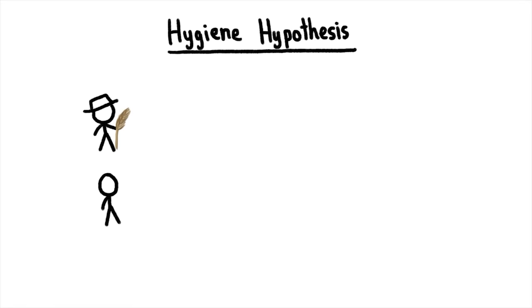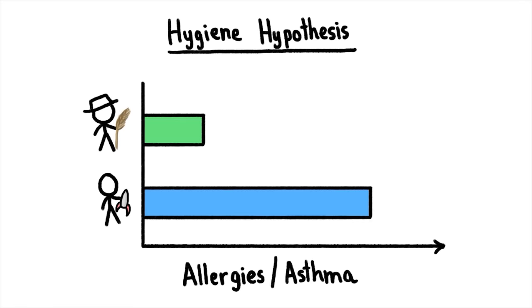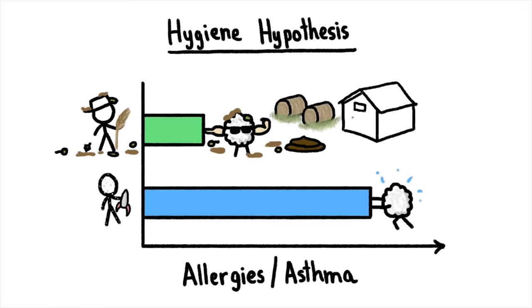You know how children from Amish farm families have been found to suffer less from allergies and asthma than is typical in the modern westernized world? Well, scientists think it's because their immune systems develop more fully thanks to exposure to a wide variety of dirt, bacteria, and germs in fermenting feed, cow manure, and other barnyard delights.